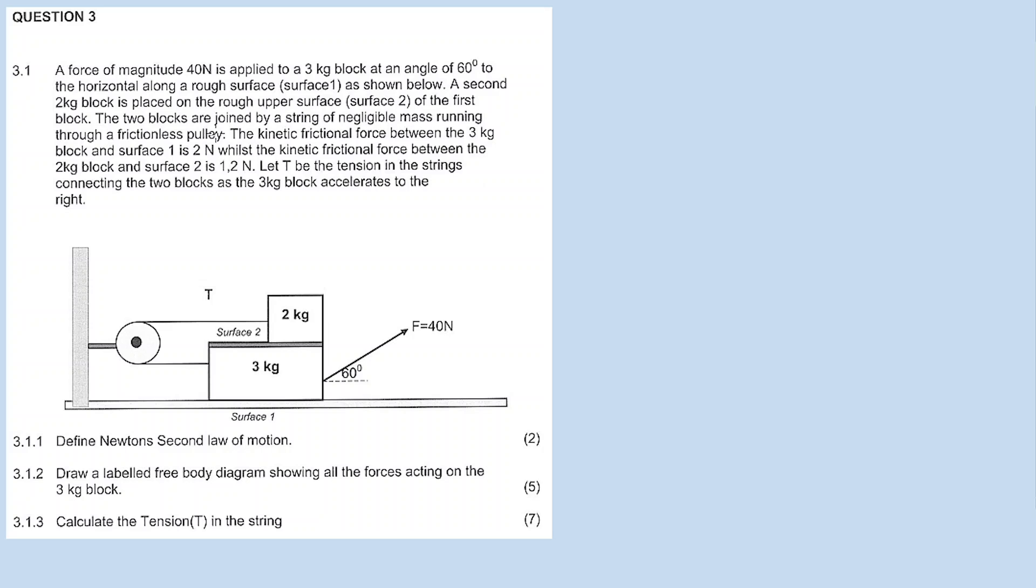The two blocks are joined by a string of negligible mass running through a frictionless pulley. The kinetic frictional force between the 3kg block and surface 1 is 2 newtons, whilst the kinetic frictional force between the 2kg block and surface 2 is 1.2 newtons. Let T be the tension in the string connecting the two blocks as the 3kg block accelerates to the right.